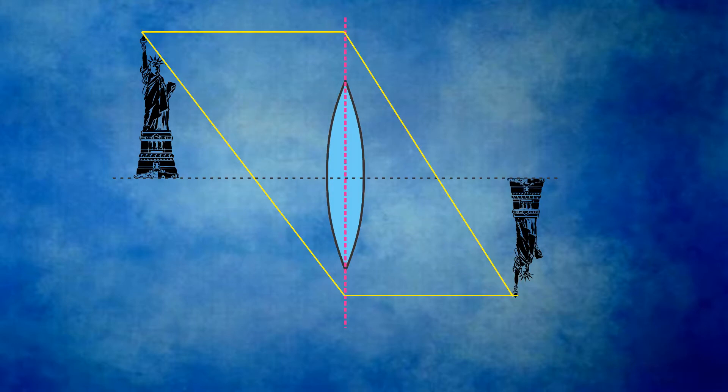Finally, we notice that the marginal rays cross the optical axis in front and behind the lens. We also notice that the distances of these crossings, front and back, are the same. This distance is the focal length of the lens, denoted by lowercase f.